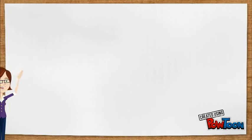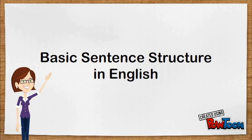In this video I'm going to explain the basic structure of a sentence in English. Let us first look at the basic parts of a sentence: the subject, the verb and the object.